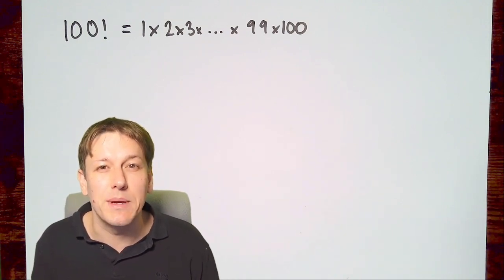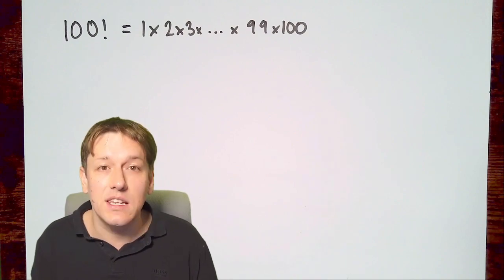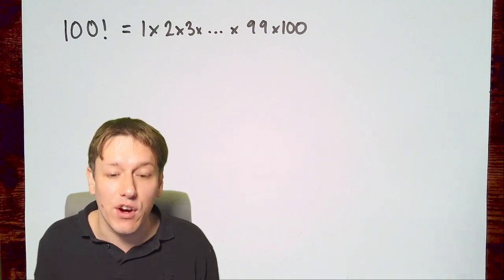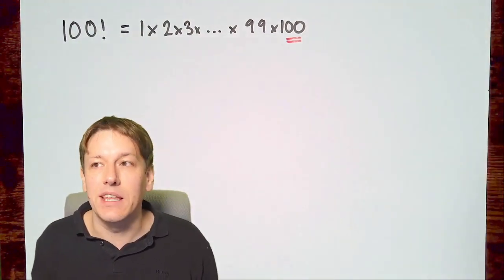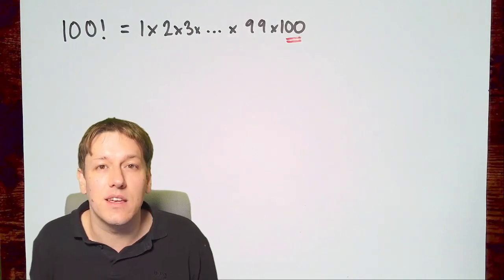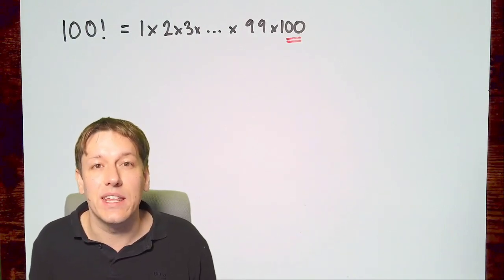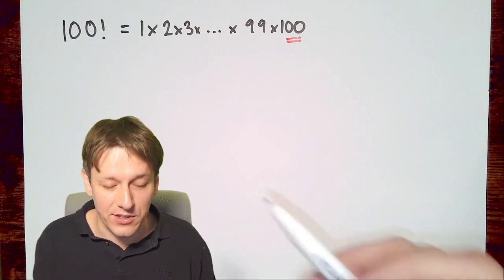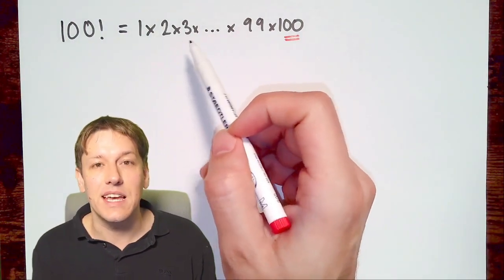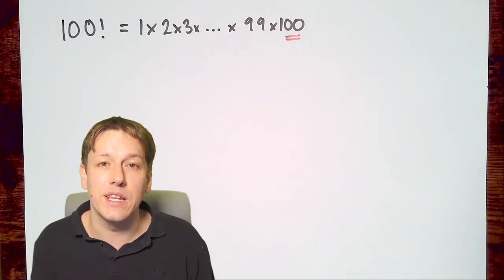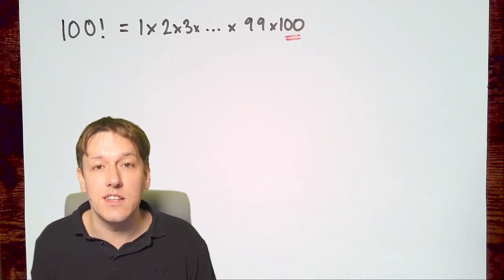So 100 factorial is a really big number. The first thing we can notice is that it does definitely end in a zero, because the last number here has got 100 in it, it's a multiple of 100, so it will definitely end in at least two zeros. And it's a multiple of lots of other multiples of 10 as well, like 10 and 20 and 30 and 40. So there will be quite a lot of zeros on the end of this number.